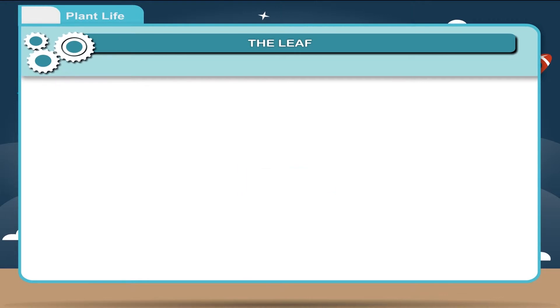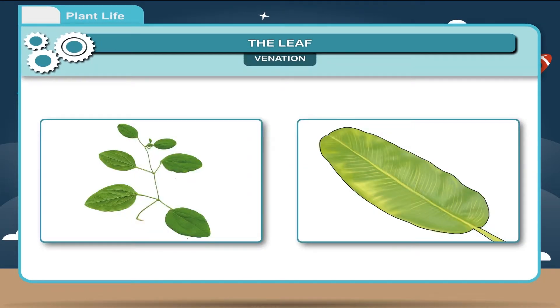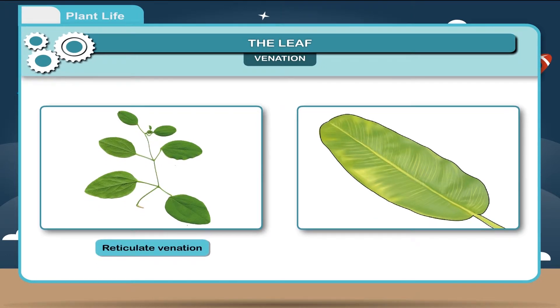Venation. The arrangement of veins and veinlets of the leaf blade is called venation. Venation is of two types. Reticulate venation and parallel venation.